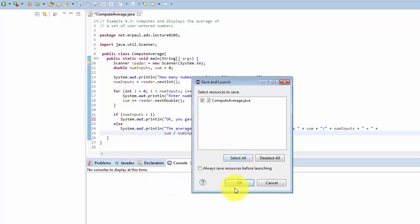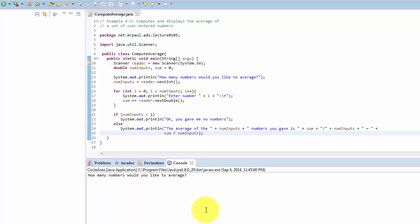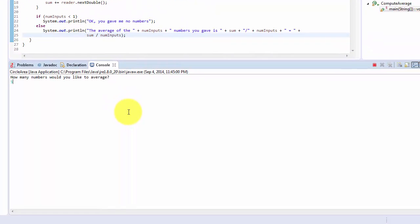Run compute average dot Java. How many numbers would you like to enter? Let's enter in five numbers. Number zero is 1.5, number one is 4.4, number two is 7.3, number three is 100.5, number four is 7.7. The average of the five numbers you gave me is 121.4 divided by 5.0, which is 24.28.